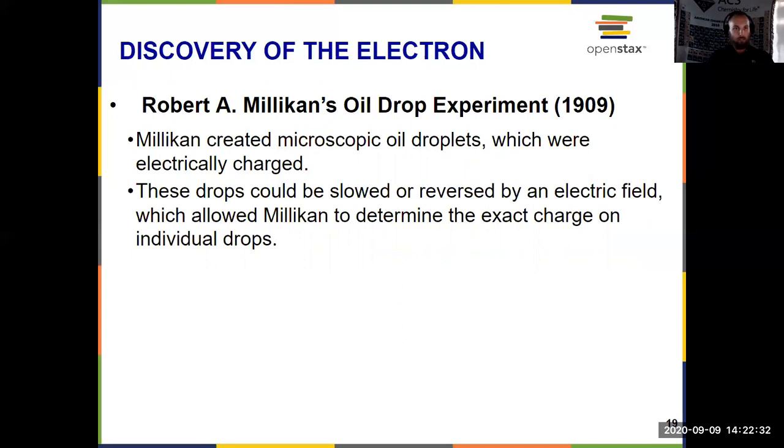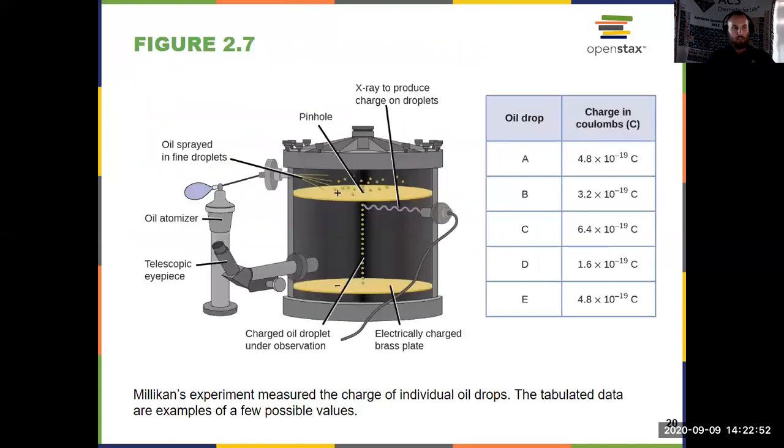And what Robert Millikan did was create microscopic oil droplets, which he made electrically charged, and he was able to, instead of having them drop with the force of gravity, he could slow the rate of the drop or even reverse it by applying an electric field.